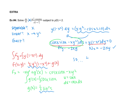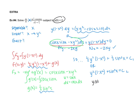Our solution contains both expressions: ½y²(1 − x²) + ½sin²(x) = c. Multiplying by 2, we can also write y²(1 − x²) + sin²(x) = c. We still have the initial condition y(0) = 2 to deal with. Substituting: 4·(1 − 0) + 0 = c, so c = 4. Our final solution is y²(1 − x²) + sin²(x) = 4.